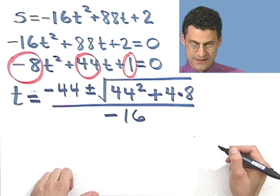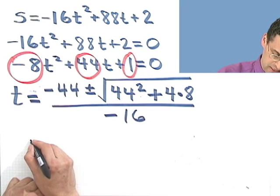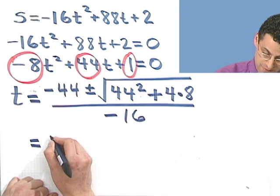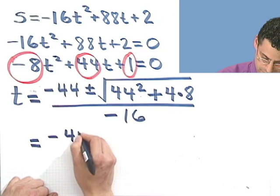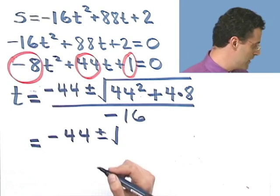What a big old mess. Okay, so what do we see here? Well, we could clean this up a little teeny bit, I guess. Not much, though. Plus or minus square root. Okay, let's figure out what that number is.